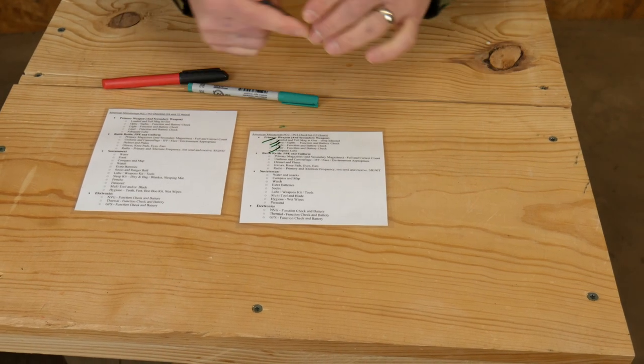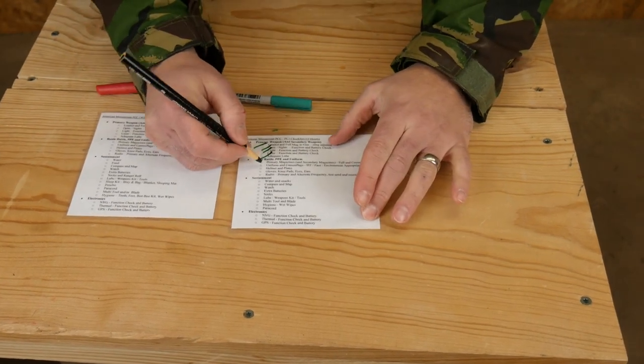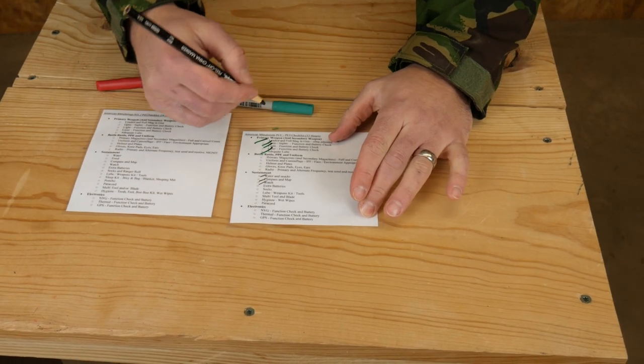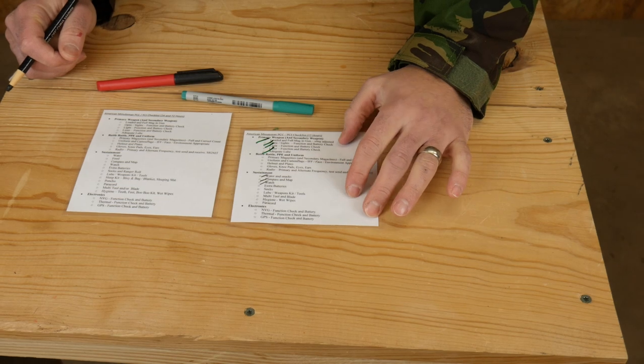Again, you could do the same thing with a grease pencil, and you could come down here and say, yep, we have water. Yep, we have a compass. Yep, we have all this stuff and make sure that you're all good to go.